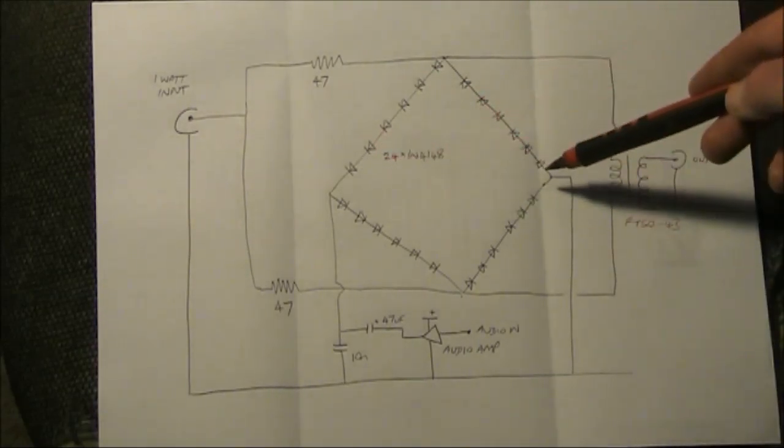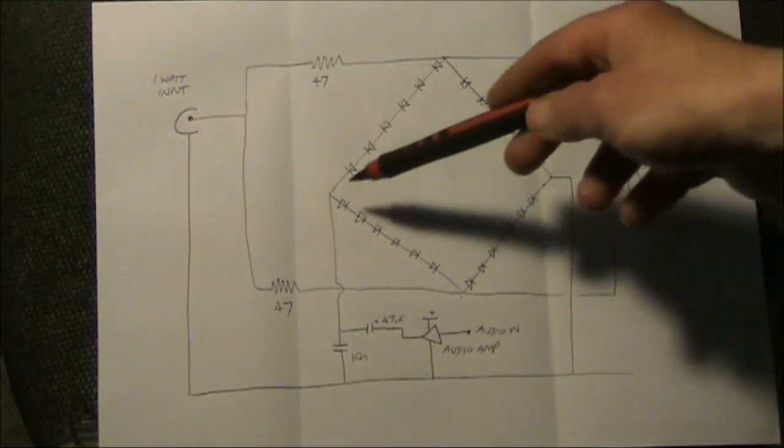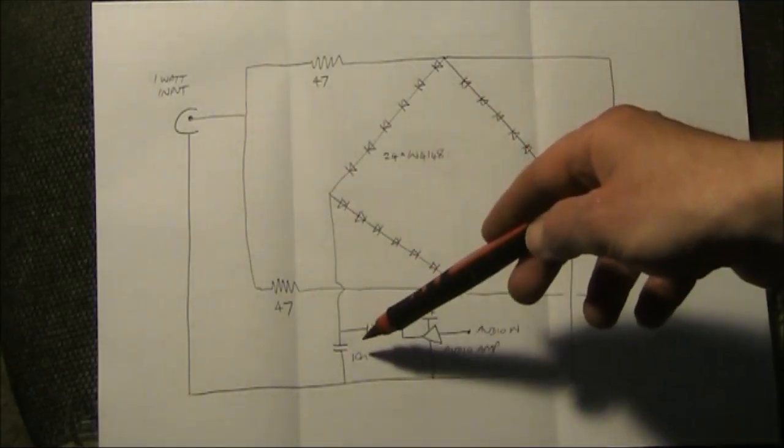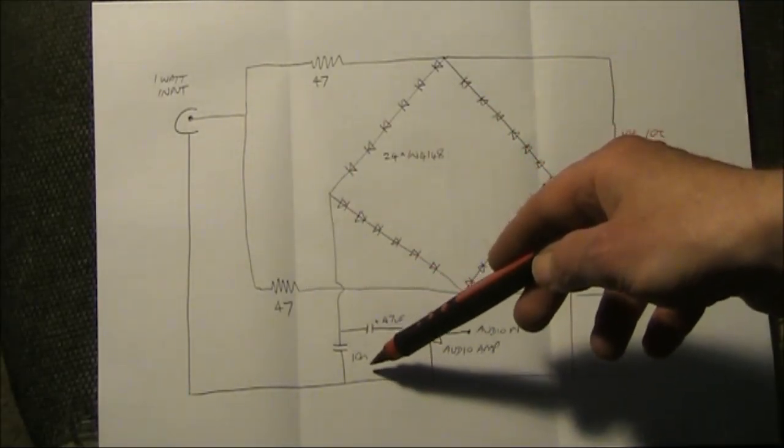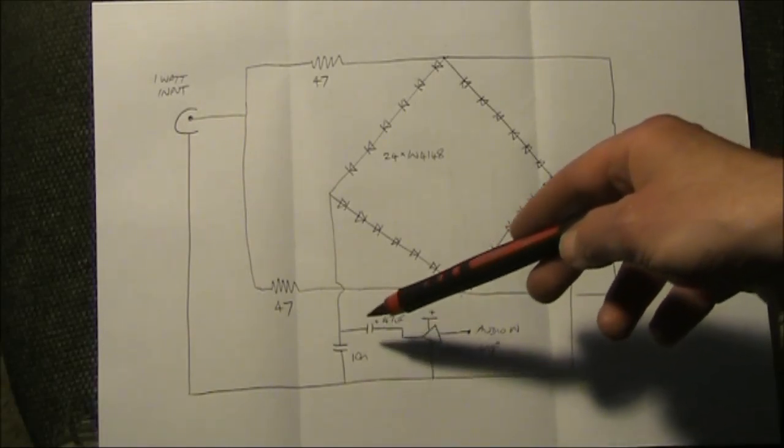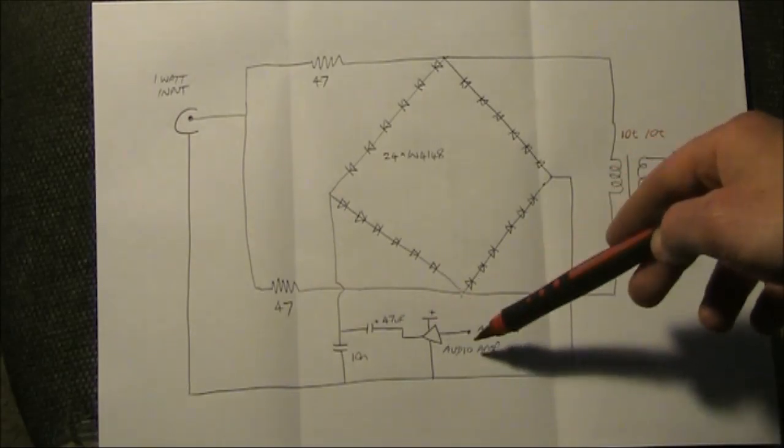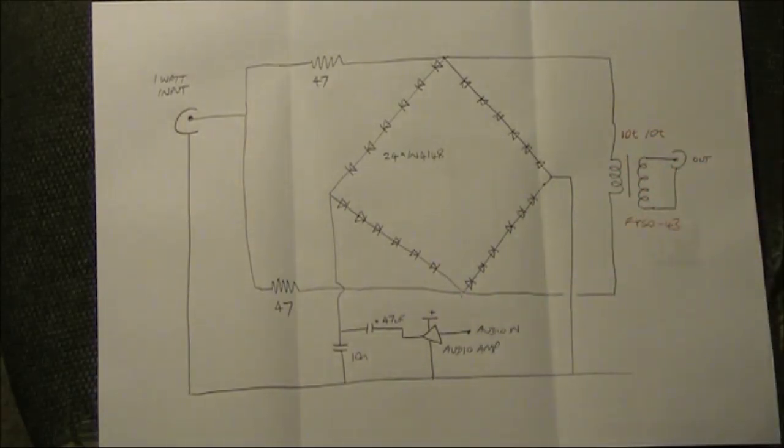As for the other sides of the diodes, one side goes just to ground, and the other side goes to ground via a 10 nanofarad disc ceramic capacitor. And it's at this point that you are applying the audio from the audio amplifier. If you don't have an audio amplifier straight away, you could use the output of a transistor radio or computer speakers or whatever for your experiments.